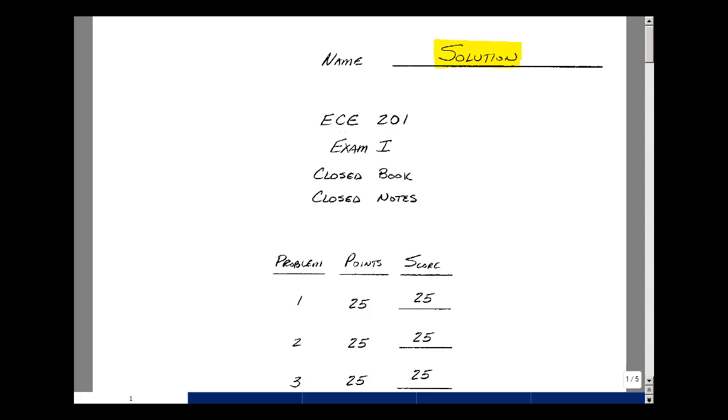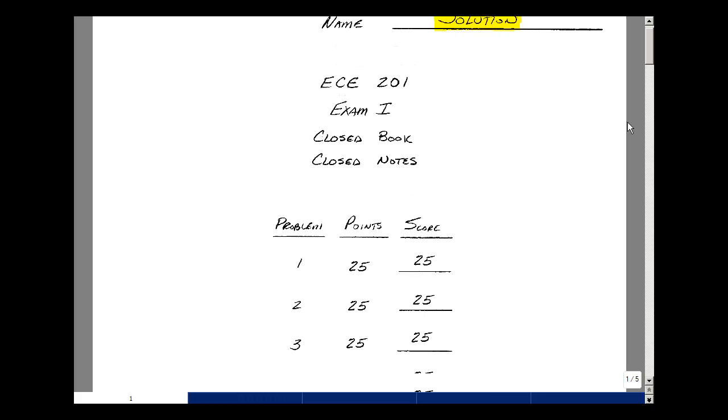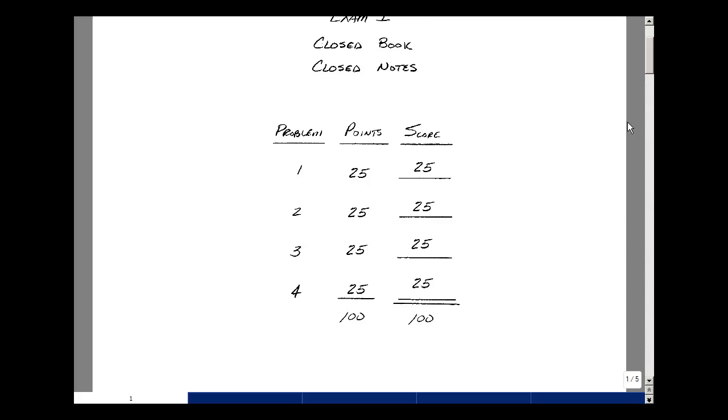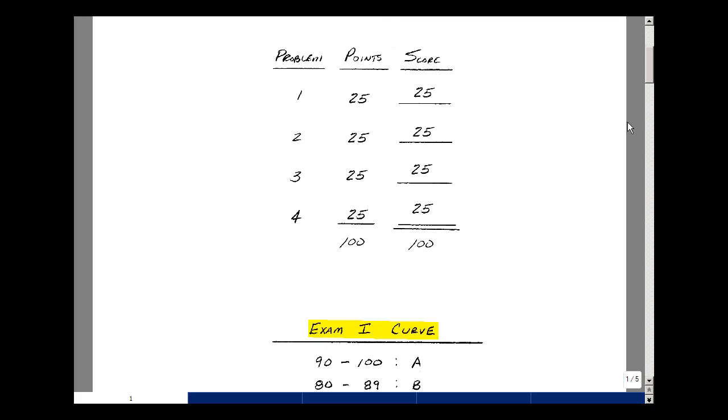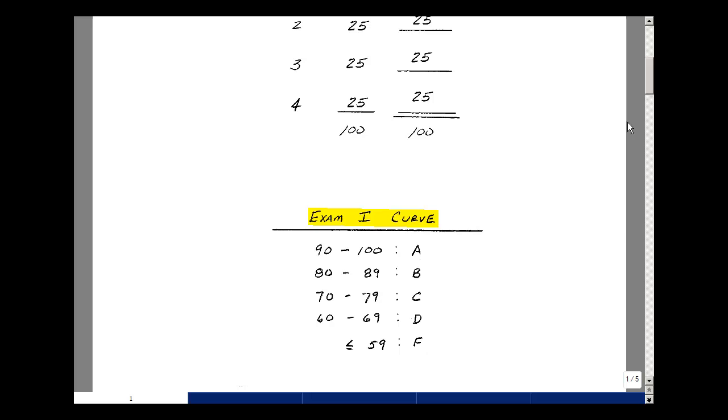This lesson deals with the solution to exam number one. You can find this exam solution near the end of the ECE 201 ebook. This was a four-problem test, each problem worth 25 points. I'll also show you shortly how to grade the exam.